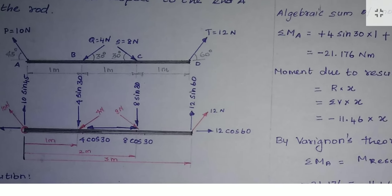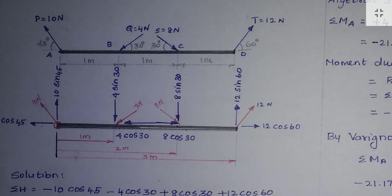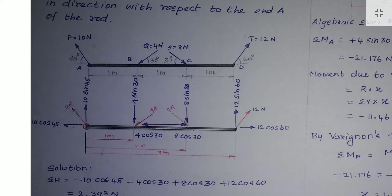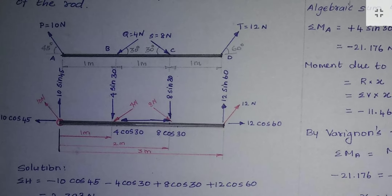For the first force of 10 Newton at 45 degrees, it is split into two components: one vertical and one horizontal. As the direction is towards up and left, the vertical component is upward and the horizontal component is towards left. The vertical component is 10 sin 45 and the horizontal component is 10 cos 45.